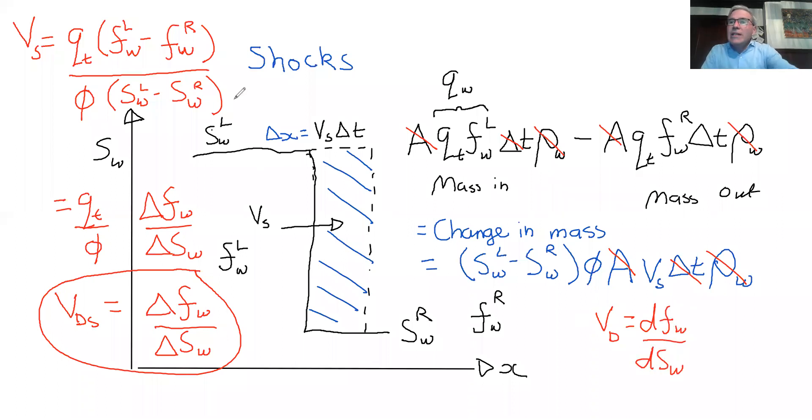So in fact, this derivation, simply looking at an explicit conservation of mass, rather more general than assuming the partial differential equation from the outset, actually has both cases, the shock and the rarefaction.